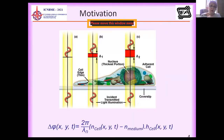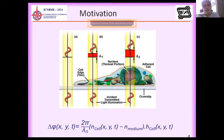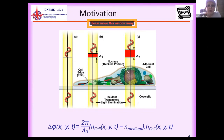To overcome all these disadvantages, I note that most biological samples are transparent for the visible region. So the interesting information about these samples is the phase information, because phase information contains information about refractive index and thickness. And so we can analyze the structure of the samples under investigation.